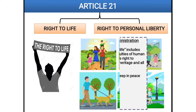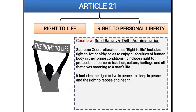The second case law is Sunil Batra vs. Delhi Administration. The Supreme Court, building on Kharak Singh's case, held that the right to life includes the right to a healthy life, because if a person is healthy, then he will live well. The scope of the right to life, the Supreme Court said in this case, includes peaceful sleep, physical and mental peace, and good health — all are part of the right to life.